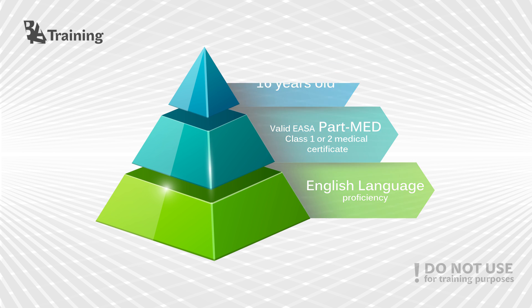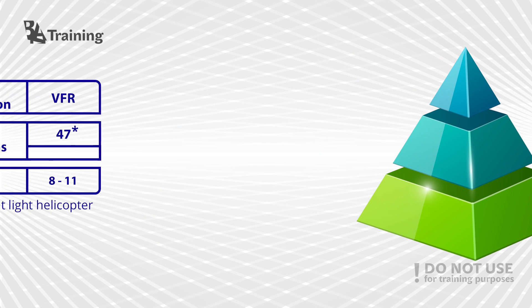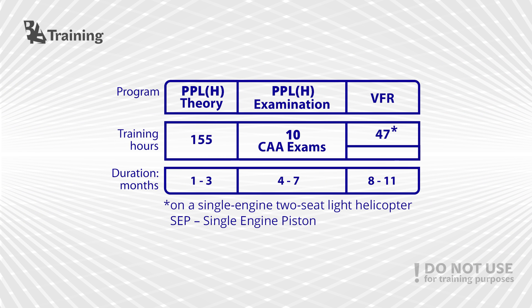Moving on, let's talk about what the course itself consists of. Firstly, there is a theoretical part which is performed at our headquarters in Vilnius, Lithuania. It consists of 155 hours of ground training. It includes a total of nine subjects such as aircraft general knowledge, meteorology, navigation, communication, principles of flight, and others.